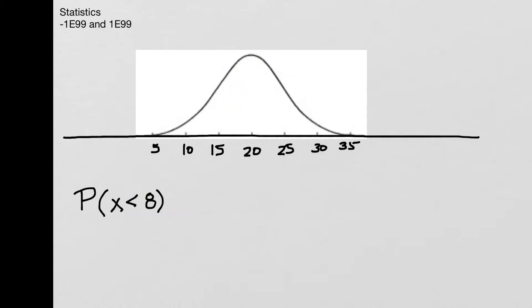Suppose for example, I want to find the probability that x is less than 8. I'll mark this on my graph, 8 is about here, and so I'm looking for the area that is less than 8, and that area is going to go all the way into the tail. So it goes out to infinity.